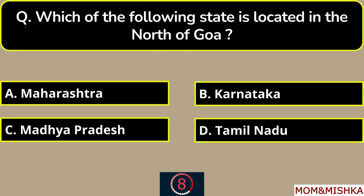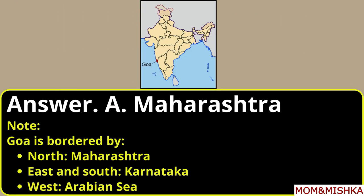Which of the following states is located in the north of Goa? It's Maharashtra, option A. Goa is bordered by Maharashtra in the north, Karnataka from the east and south, and in the west by the Arabian Sea.